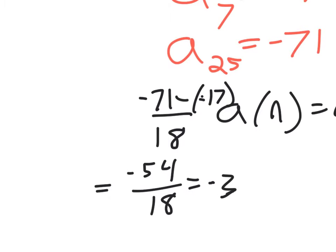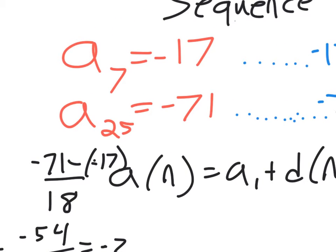Another way you could think of that is that an arithmetic sequence is increasing or decreasing linearly. So you can find the slope of the line, call this y2 and y1, call this x2 and x1, and find your slope like you were taught before.